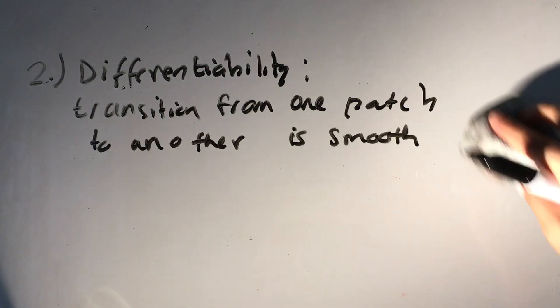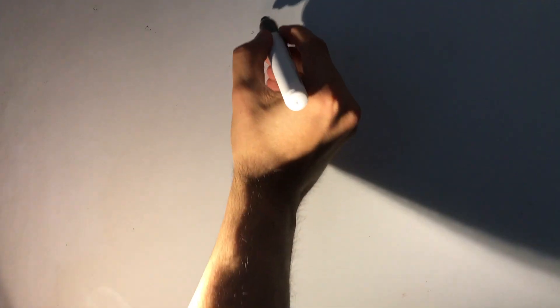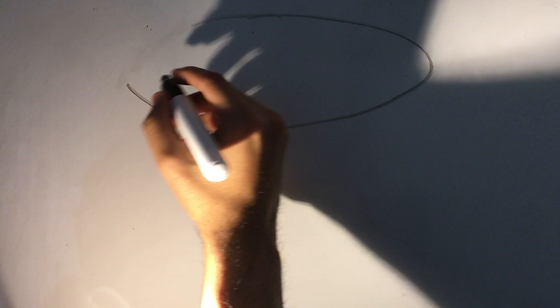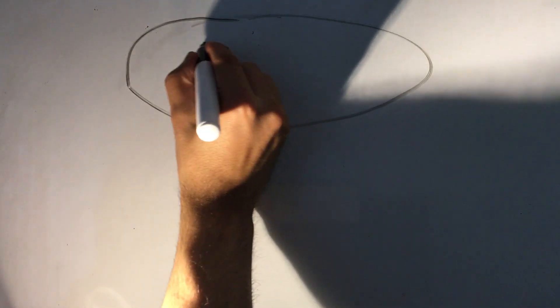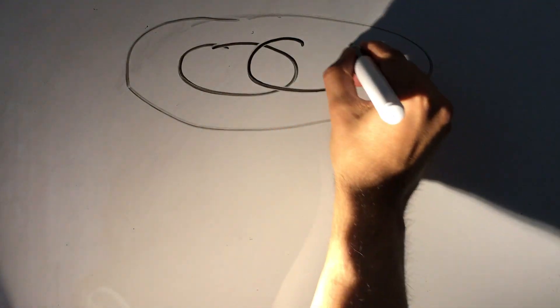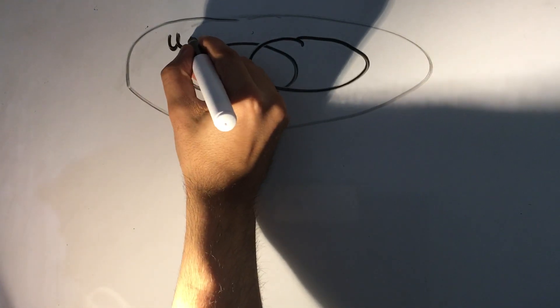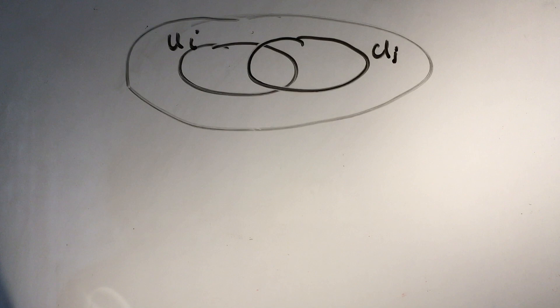And when we mean smooth we mean if you have a function and you can differentiate it infinite amount of times and you still get a well-defined answer, that is smooth. So to demonstrate this, suppose we have a manifold M again.